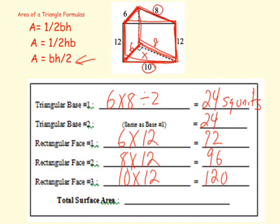And then we would just add all of these up, and that gives us the surface area of our triangular prism. That's all there is to it.